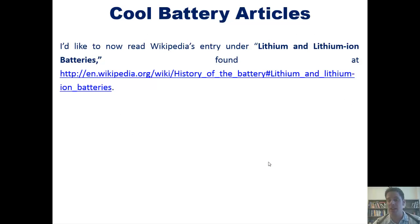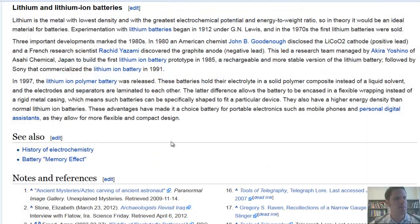I'd like to conclude now by reading Wikipedia's entry under lithium and lithium ion batteries, which is found at this HTML. It's pretty darn cool and I thought it would be interesting for you. Lithium is the metal with lowest density and with the greatest electrochemical potential in energy to weight ratio. So in theory, it would be an ideal material for batteries. Experimentation with lithium batteries began in 1912 under GN Lewis, and in the 1970s, the first lithium batteries were sold. Three important develops marked the 1980s. In 1980, an American chemist, John B. Goodenough, disclosed the lithium cobalt oxide cathode positive lead, and a French research scientist, Rashid Yasami, discovered the graphite anode or negative lead. This led a research team managed by Akira Yoshimo of Asai Chemical, Japan, to build the first lithium ion battery prototype in 1985. A rechargeable and more stable version of the lithium battery, followed by Sony that commercialized the lithium ion battery in 1991.